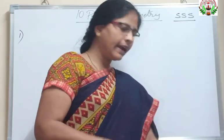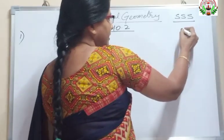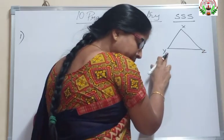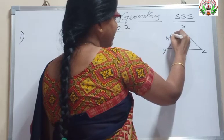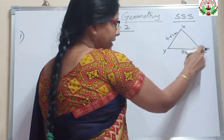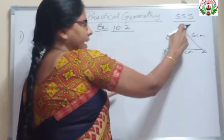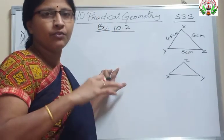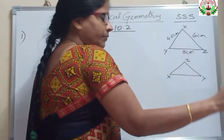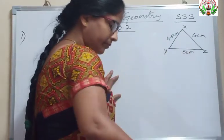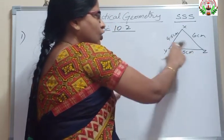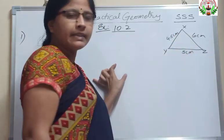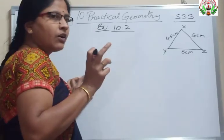Let us draw the rough diagram first and then we are going to start our construction. This should be a triangle — let us take X here, Y here and Z here. They have given XY as 4.5 cm, YZ as 5 cm, and ZX as 6 cm. YZ is the base of the triangle, XY is one side, and XZ is the other side.